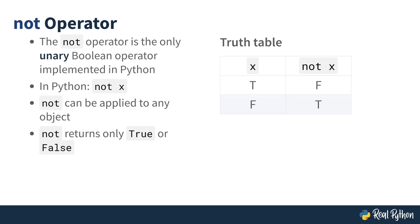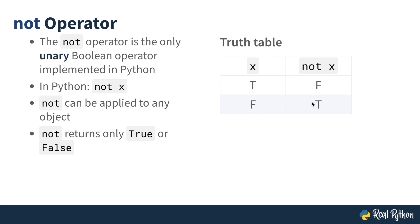Here is the truth table for the not operator. If the input x has a Boolean value of true, then not x returns false. If the input x has a Boolean value of false, then not x returns true. So not simply negates the Boolean value of its input.